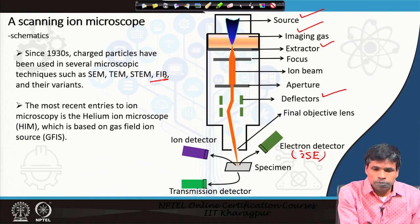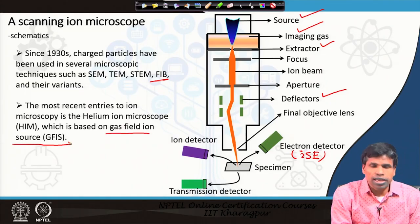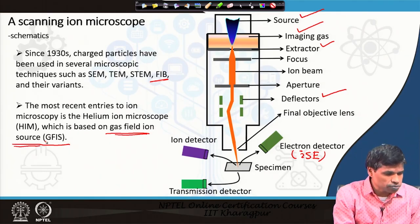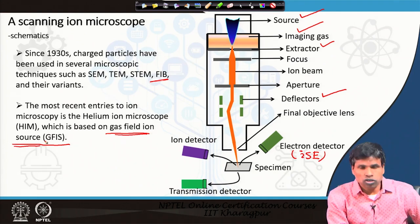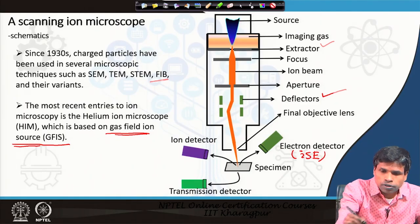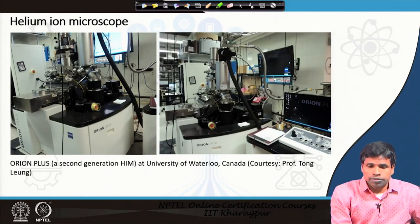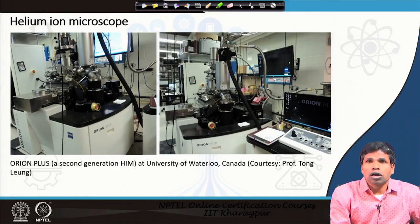This source is also called a Gas Field Ion Source (GFIS) because gas is filled into it. Commercialization of the helium ion microscope began in 2007 after the discovery of a stable tip in 2005 by ALIS Corporation.